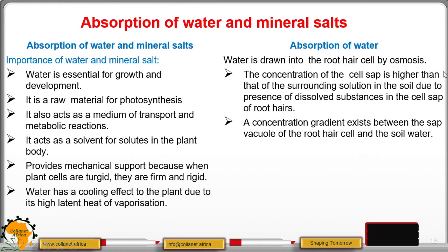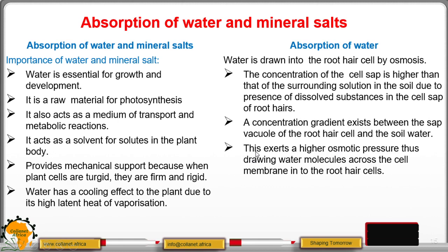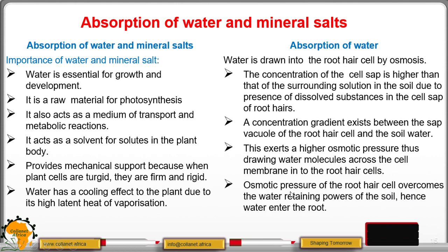Osmosis is the movement of water molecules from a region of high concentration to a region of low concentration. We have two regions where we have a higher concentration, and that is why a higher osmotic pressure is exerted, making water molecules to be drawn across the cell membrane into the root hair cells. The osmotic pressure of the root hair cells overcomes the water-retaining powers of the soil, hence water enters the root.